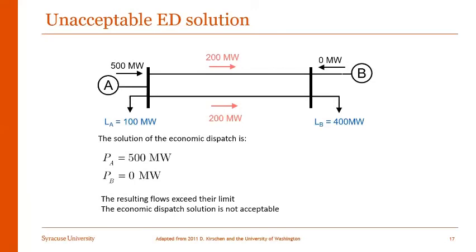Considering that the line limits were 150 megawatts, we see that the resulting flows exceed their limits. In this case, the economic dispatch solution is not acceptable. This is because you can only overload lines to a certain extent. If you keep on overloading lines for a long time, they will sag and might cause failures. Once a line fails, it might cascade to multiple line failures, and we don't want to end up in that situation.